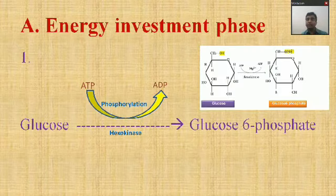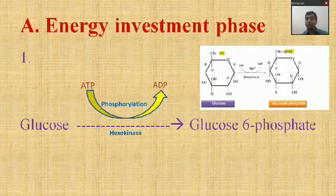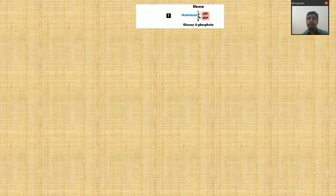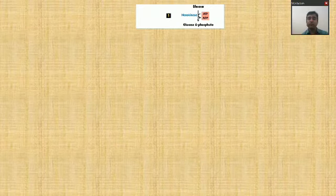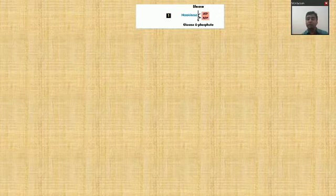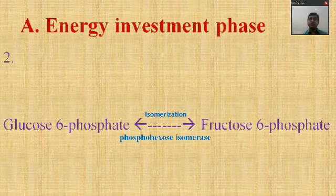The phosphate group is added to carbon number six of glucose. So reaction one is: glucose to glucose-6-phosphate, with loss of one ATP. In the diagram you can see that ATP is converted, meaning loss of one phosphate group.